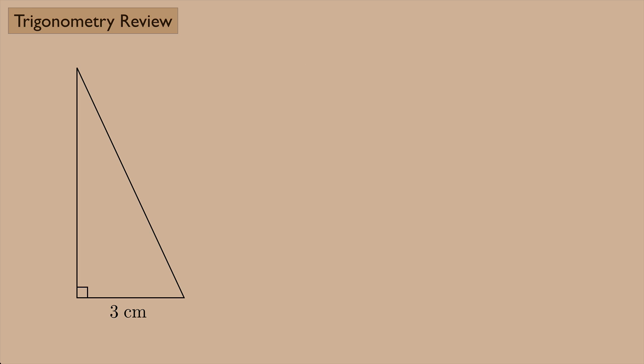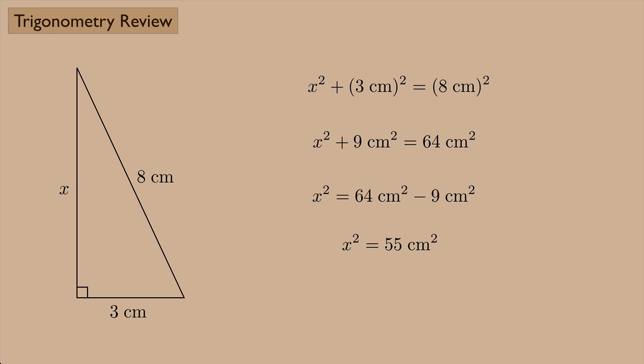So an example. Suppose we have this side of 3 centimeters, the hypotenuse is 8 centimeters, and we want to find the missing side. The Pythagorean theorem would say x squared plus 3 centimeters squared equals 8 centimeters squared. Notice that the hypotenuse 8 is by itself on one side of the equation. Well, 3 centimeters squared would be 9 square centimeters, and 8 centimeters squared would be 64 square centimeters. Then we can subtract, and we get x squared equals 55 square centimeters. Then we can square root both sides, and we would get a positive and a negative answer. But we just want to take the positive value since we're talking about the length of the side of a triangle, and we get 7.42 centimeters.